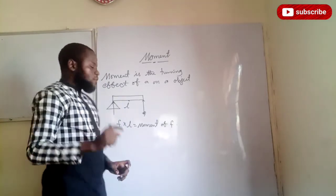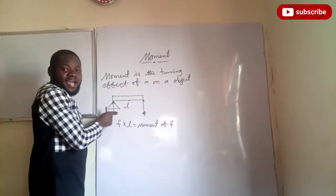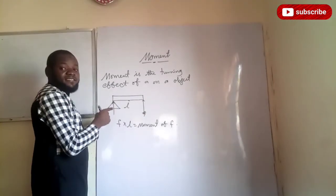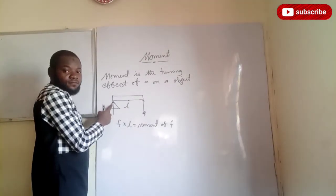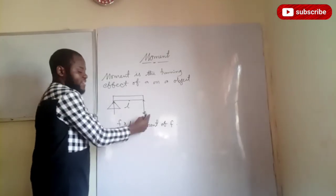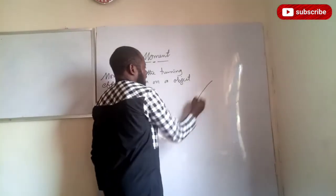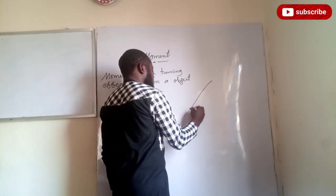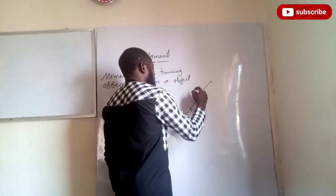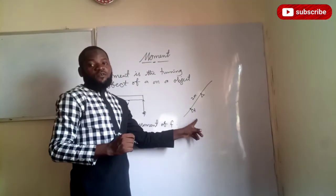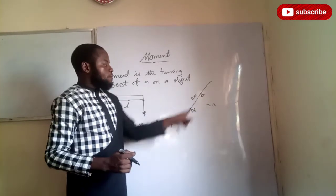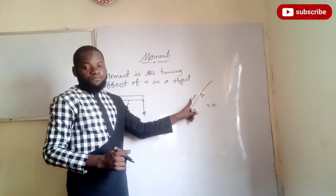If you look at this now — this body, this is the fulcrum, that is the axis of rotation. This is the applied force, and this applied force is perpendicular to this body. The perpendicular distance is the distance between this body and the axis of rotation. When you take the product of this force and this distance, what you have is the moment of this force. But if a force of 5 newtons is applied and the distance is 2 metres but parallel to the force, the moment is zero — because this force is parallel to its distance.